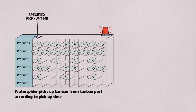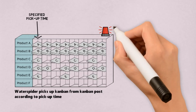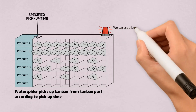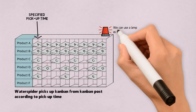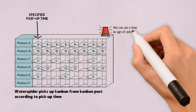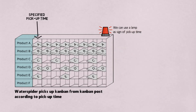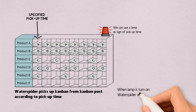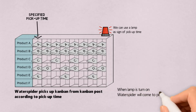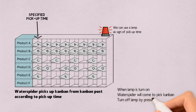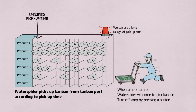In implementation of the HiJunka Post, we can use a lamp as a sign of the time to pick up kanban. When the lamp turns on, the water spider will come to pick up kanban based on the time, and turn off the lamp by pressing a button. The lamp will turn on again at the next pick-up time.